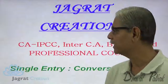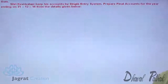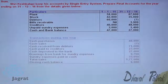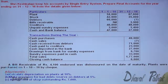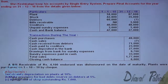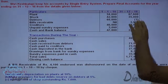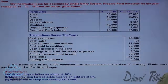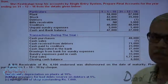Just observe the sum on the screen. Shrikesh Kalabi keeps his accounts by single entry system. Prepare final accounts for the year ending 31st December 2016 from the details given. Opening balances and closing balances are given: plant, stocks, debtors, bills receivable, creditors, unpaid sundry expenses, and cash and bank balance combined. Transactions during the year are also given.